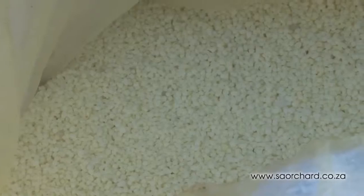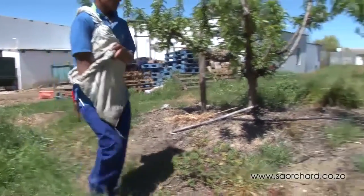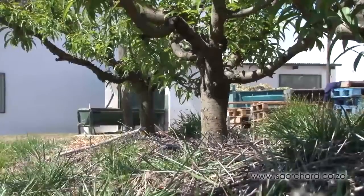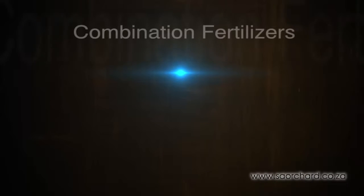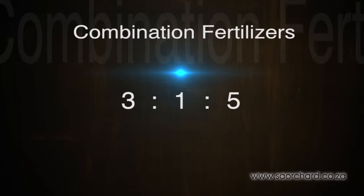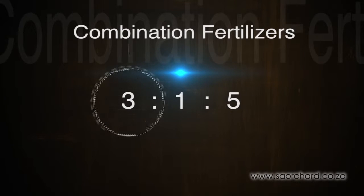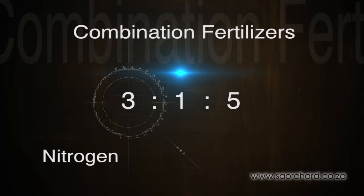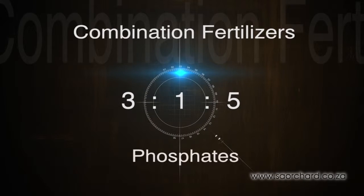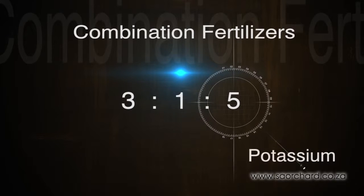Traditionally, fertilizers have been applied in granular form, broadcast onto the soil surface under the canopy of the tree. There are combination fertilizers available, such as a 3-1-5, which supplies nitrogen, phosphates, and potassium. The first number, the three, applies to nitrogen; the second number applies to phosphates; and the third applies to the potassium content. Mixers are fine to use, but many farmers prefer to give a specific element when it is needed — applying nitrogen at certain times, potassium at a certain time, and so on.